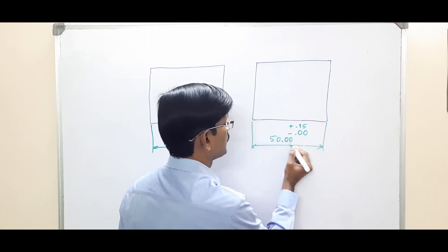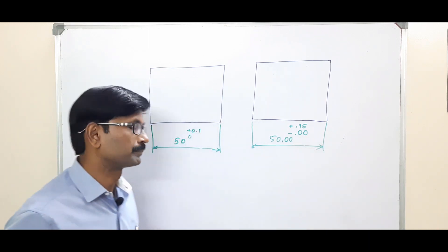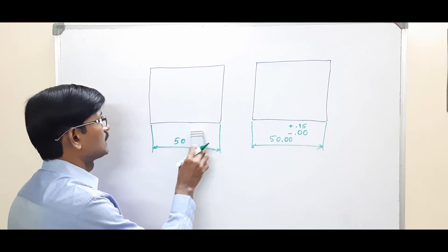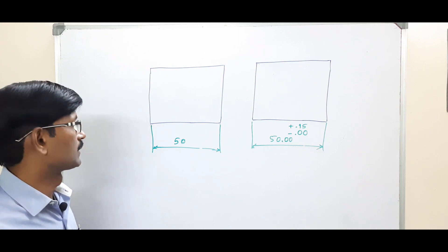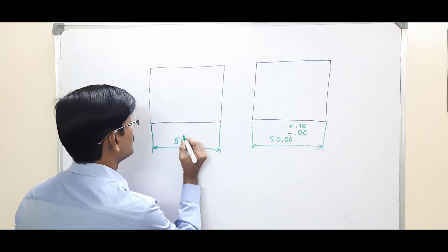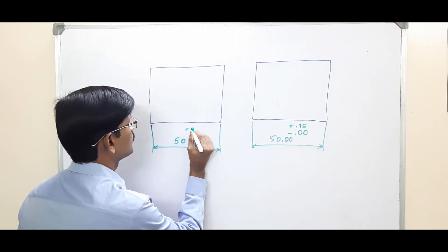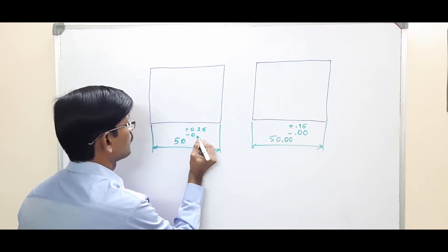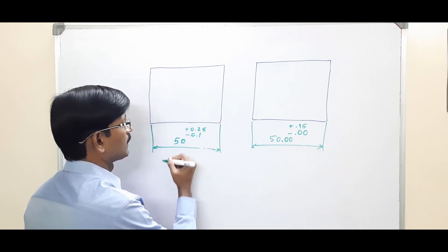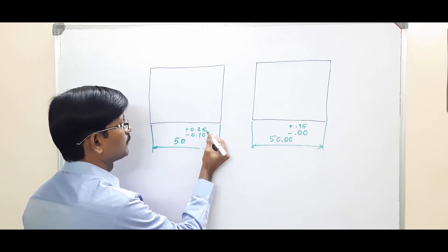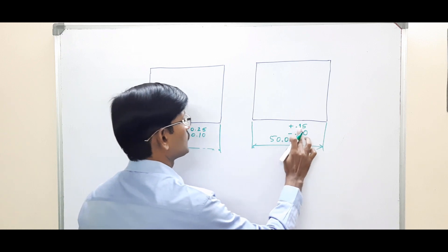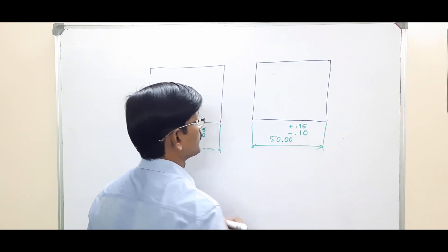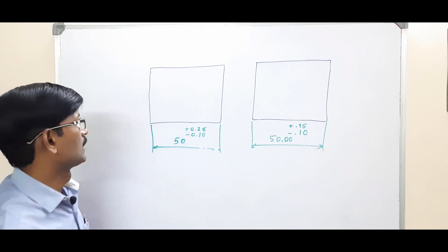Next is whenever we have the dimension in the form of plus or minus tolerances, then we add a zero. Say, for example, 0.25 minus 0.1—I add a zero to make it uniform. Whereas in this case, this will become one zero, this will become one zero.